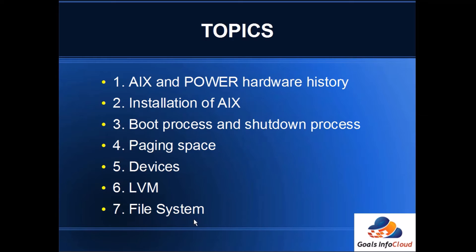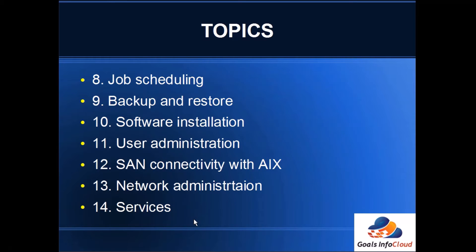The seventh topic is file system. We'll see how to create a file system on AIX, focusing mainly on JFS and JFS2. JFS2 is the enhanced journaled file system and JFS is the general journaled file system — we'll see the differences between them. The eighth topic is job scheduling — how to schedule a job in AIX.